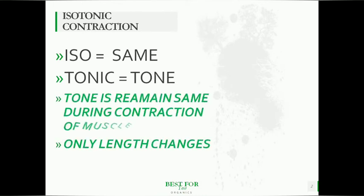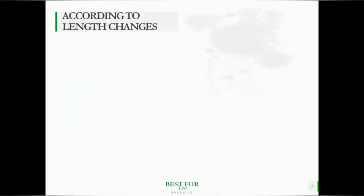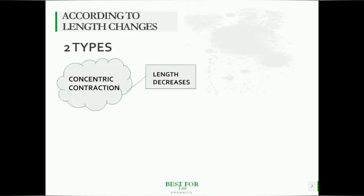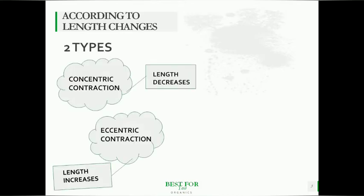The meaning of isotonic contraction is that the tone remains the same during the contraction of the muscle — only the length of the muscle changes. According to how the length changes, isotonic contraction is divided into two parts: concentric contraction and eccentric contraction. Concentric contraction means the length of the muscle decreases, while during eccentric contraction the length increases.